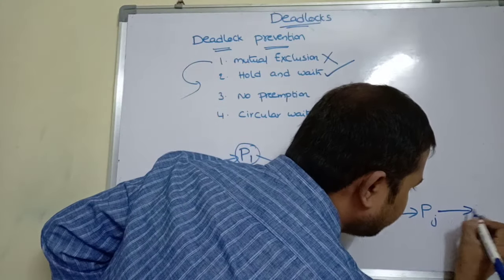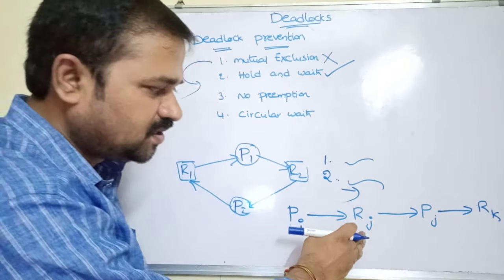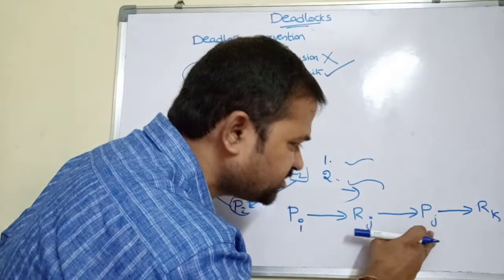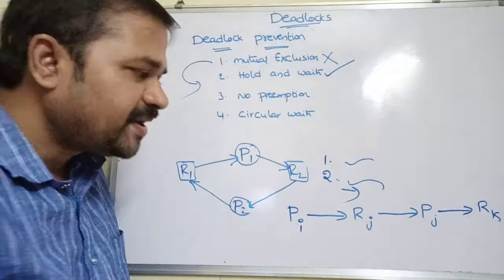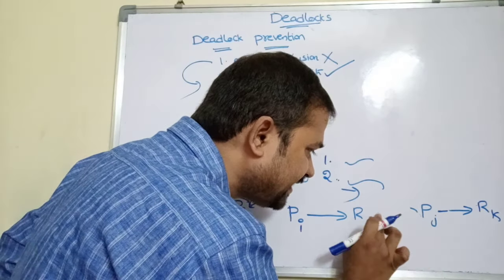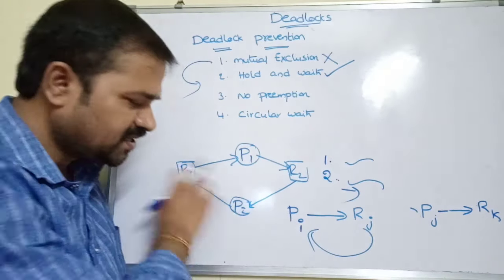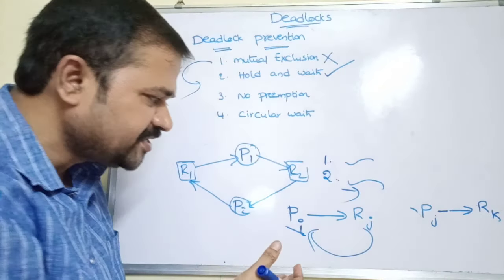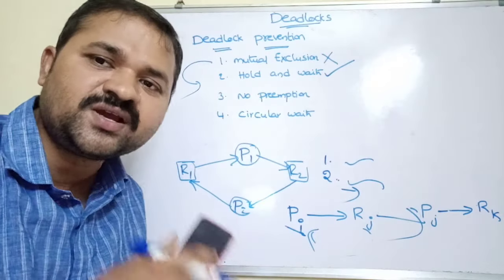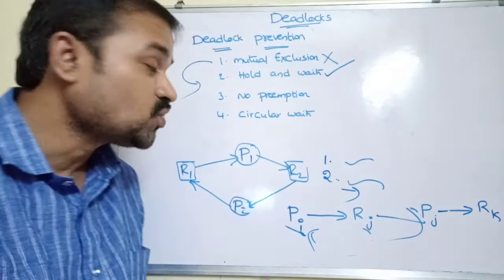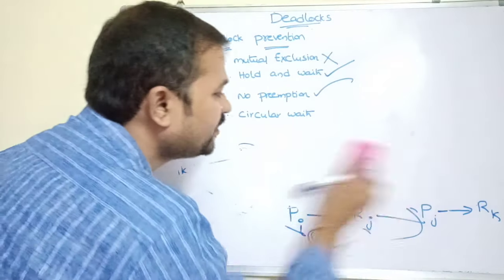The second approach: if Pj is waiting for a resource Rk, then the OS knows Pj is waiting. So the operating system forcibly releases Rj from Pj and allocates it to Pi. Pi can then complete its execution using Rj along with any other acquired resources. Once Pi finishes, the OS reallocates Rj back to Pj. By implementing these two approaches, we can eliminate no preemption. So it is not possible to eliminate mutual exclusion, but we can eliminate hold and wait and no preemption.